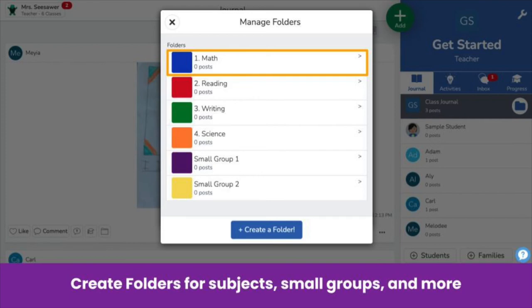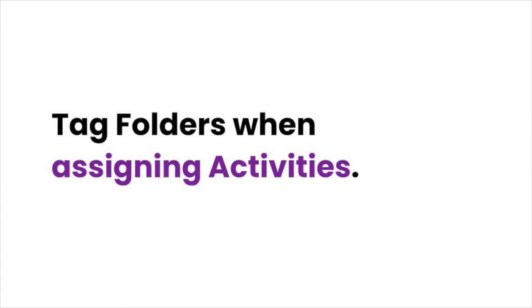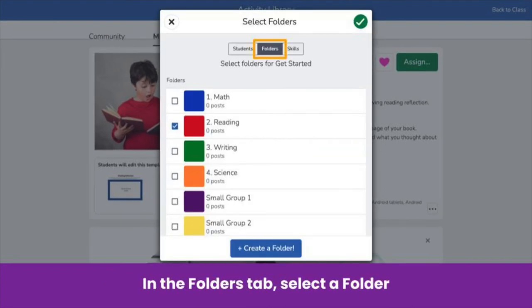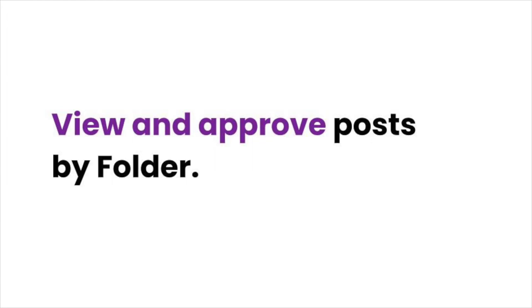Collaborate with your co-teacher to decide on a folder system that works best for you. Once folders are created, you and your co-teacher can tag folders to activities. Click Assign, Edit Students Folder Skills, and in the Folders tab select a folder. All student responses to the activity get tagged to the folder automatically. When posts are tagged to folders, you and your co-teacher can view and approve posts by folder — it's super handy.